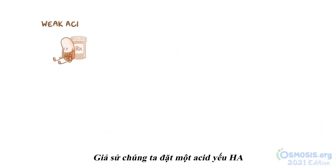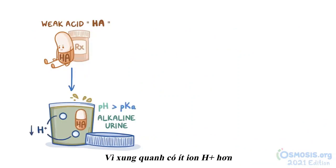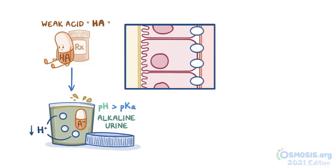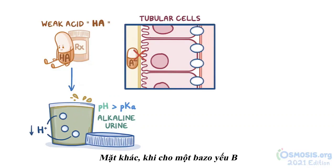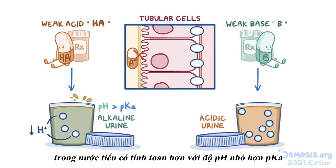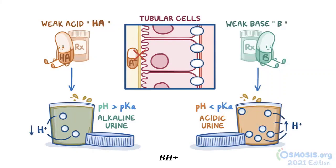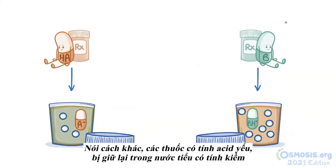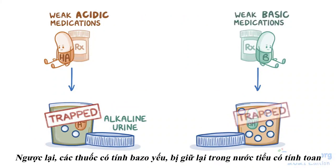If we place a weak acid, HA, in alkaline urine with a higher pH than the pKa, since there are fewer hydrogen ions around, it will give up its own hydrogen ion and turn into its charged form, A⁻. Since it's now polar, it can't pass back through the tubular cell's membrane. Conversely, if we put a weak base, B, into acidic urine with a pH lower than its pKa, with plenty of hydrogen ions around, it grabs one and turns into its charged form, BH⁺, which cannot be reabsorbed. In other words, weak acidic medications are trapped in alkaline urine, while weak basic medications are trapped in acidic urine.